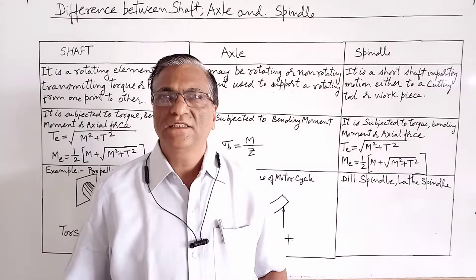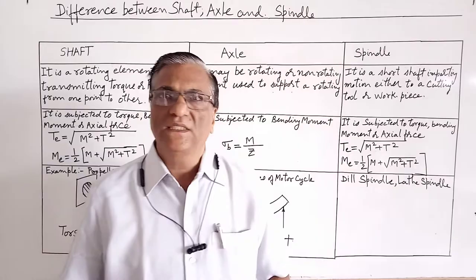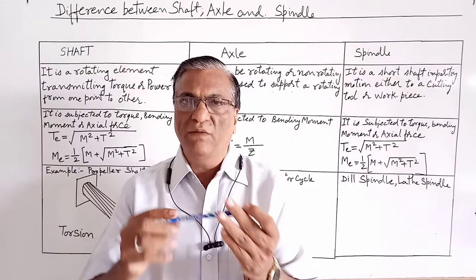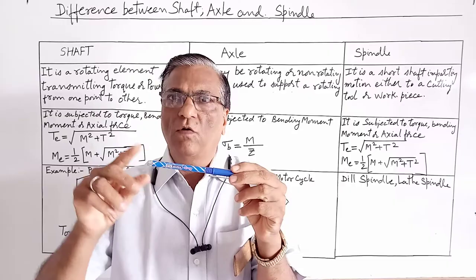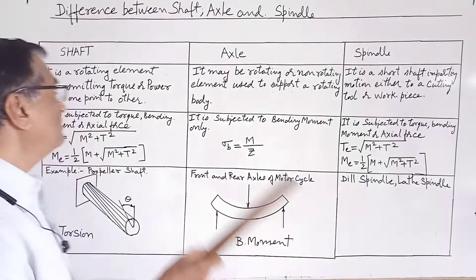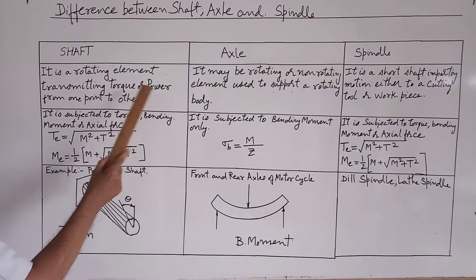In the previous lecture, I have already defined what is shaft. Shaft is a rotating member which is used to transmit torque or power from one point to another point. So the shaft is defined as a rotating element transmitting torque or power from one point to another point.